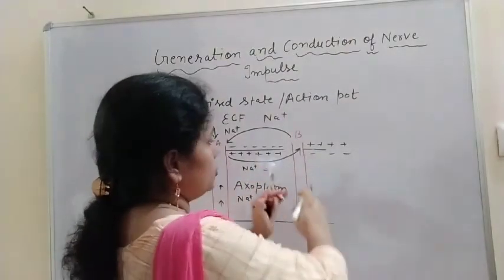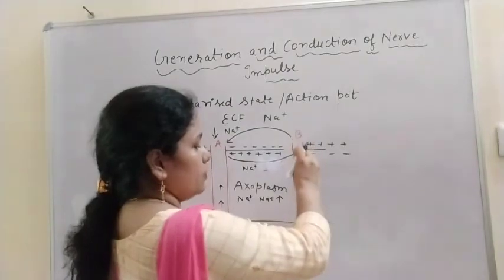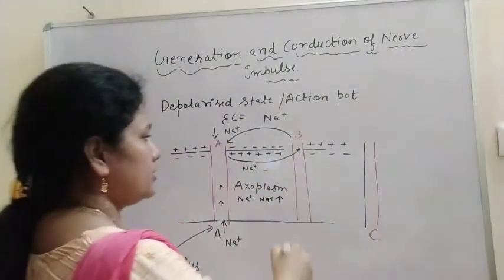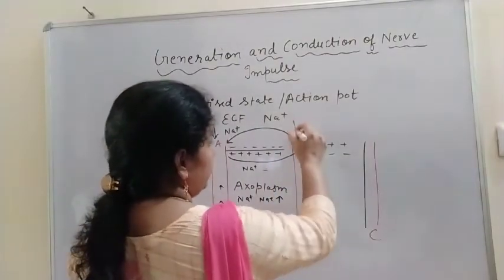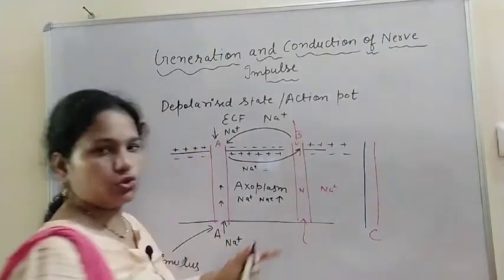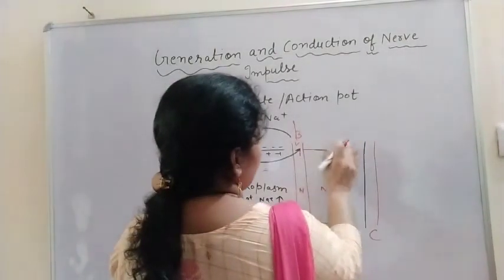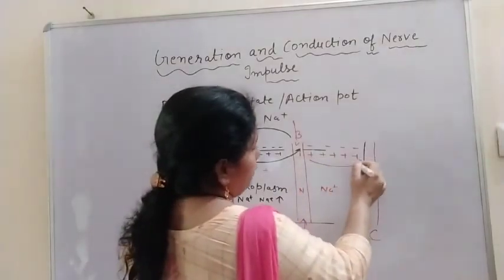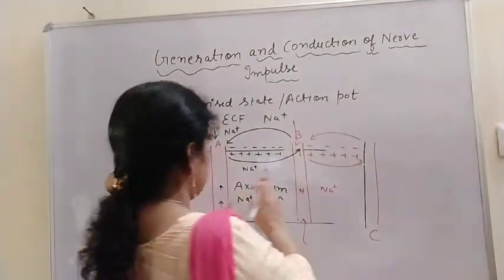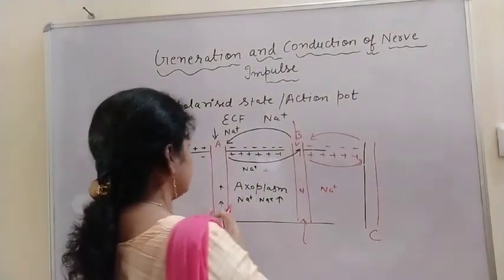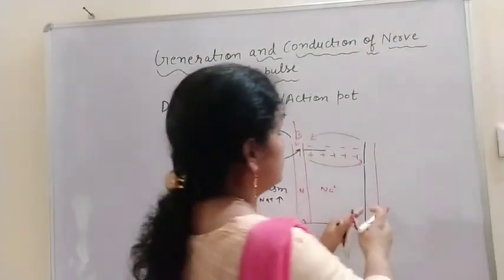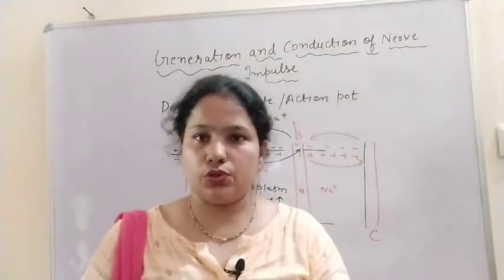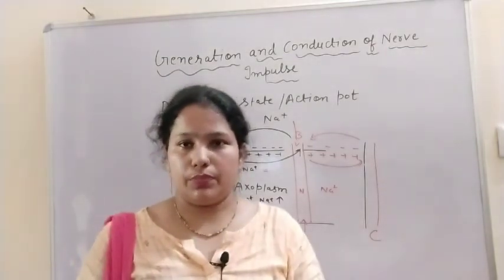This is the conduction. Again, when the message is transferred from site B to site C, there will again be a rapid influx of sodium ions and a reversibility of charge — positive inside and negative outside — and again current flows to complete the circuit. So like this, the transmission of the nerve impulse takes place from site A to B, and then from site B to C. This is how the generation and conduction of nerve impulse takes place. I hope you understood. Thank you.